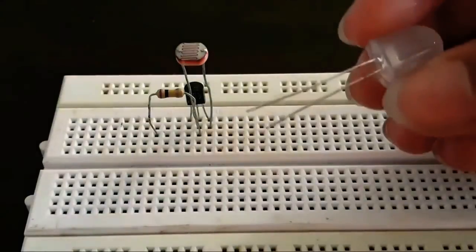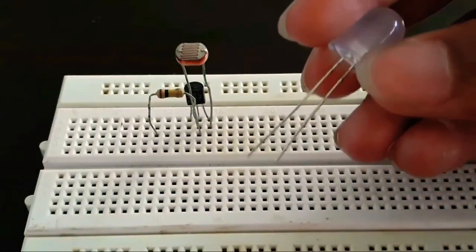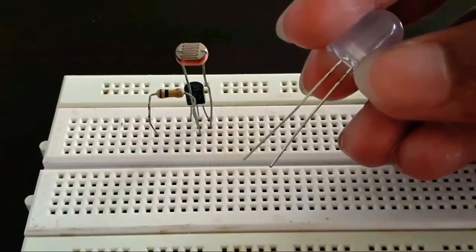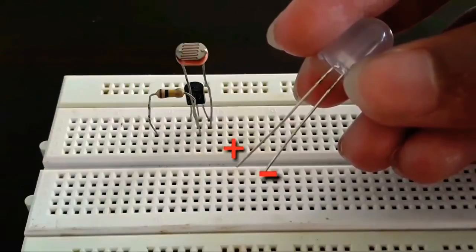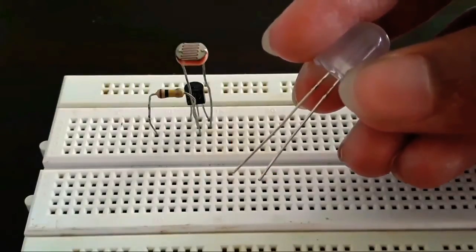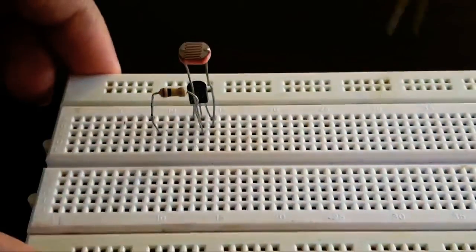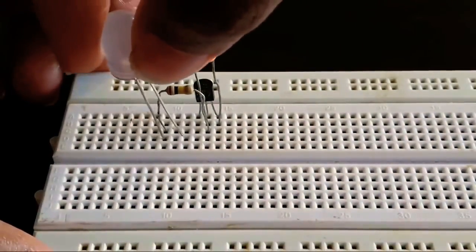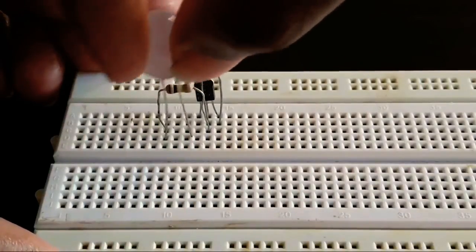Now let's connect the LED. The LED has one longer pin and one shorter pin. The longer pin is called the anode, that is the positive side, and the shorter pin is called the cathode, that is the negative side. So connect the anode of the LED to the resistor and the cathode of the LED to the collector of the BC507 transistor.